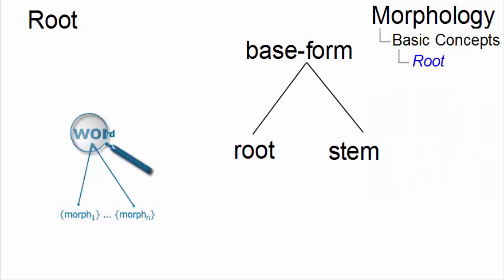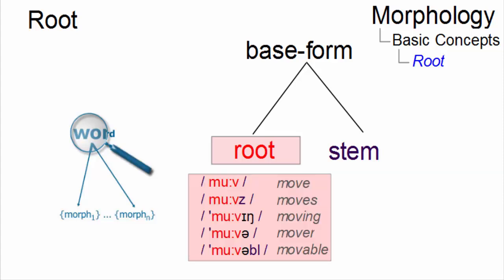A root is a special type of base form that can be defined as the irreducible core of a word, with absolutely nothing attached to it. It is the part that is always present in a word, possibly with some modification.